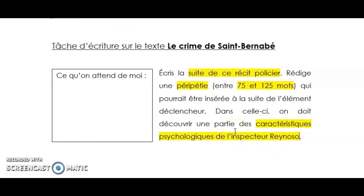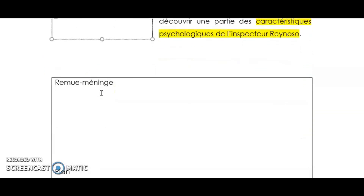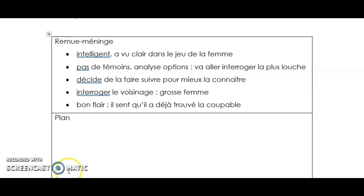Bon. Là, tu as un rectangle — pourquoi tu penses qu'il est là, le rectangle à gauche? Il sert à quoi? Bien, je pense que c'est pour reformuler ce que j'ai compris. Parfait. Qu'est-ce que tu pourrais reformuler? Bien, il faut que j'écrive une suite courte. Tu récites pas ici — oui, c'est ça. Super, tu as bien compris. OK, continue. Après — notre remue-ménage, tu te rappelles, c'est toute ta tempête d'idées, là. Toutes tes idées que tu as dans ta tempête. OK. Bien, je vais écrire mes idées. Wow! Donc, ça, c'est toutes tes idées. OK, parfait. Quand je lis tes idées, là, je les trouve vraiment très bonnes.